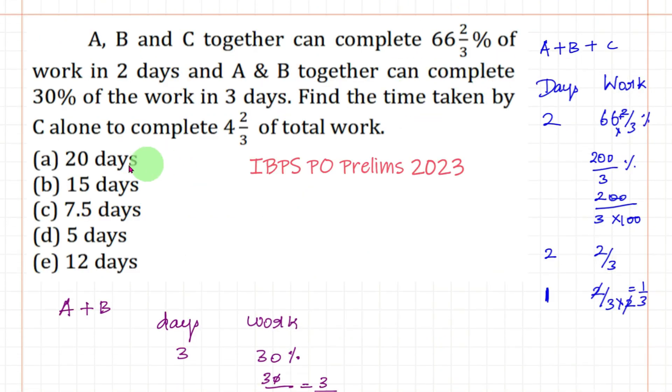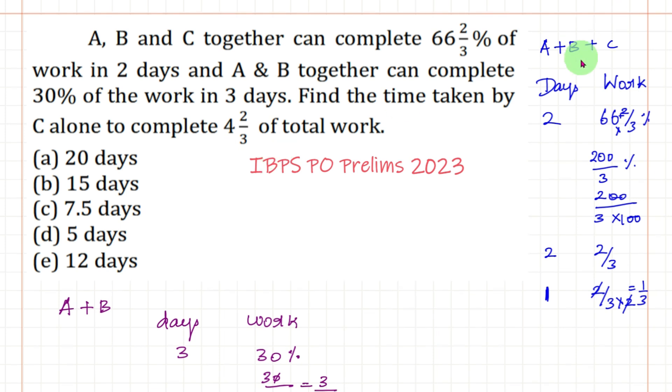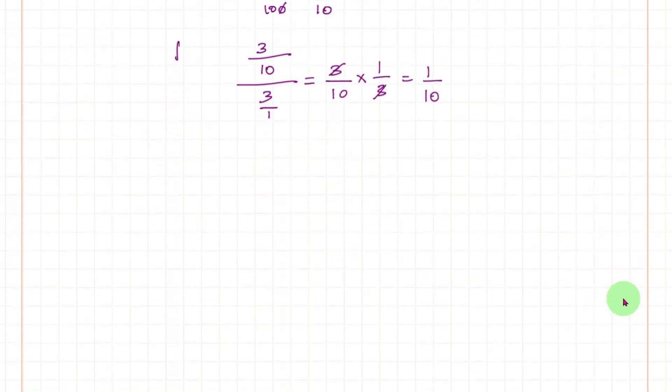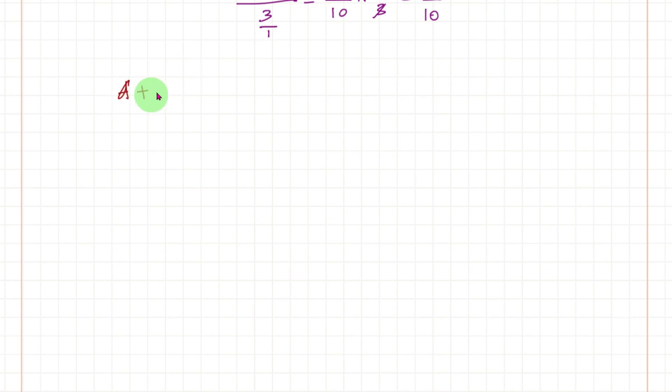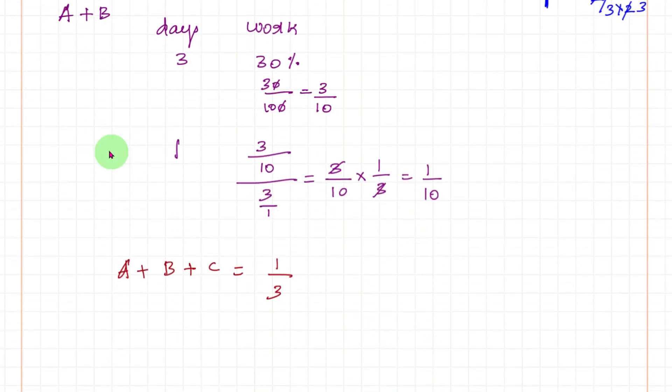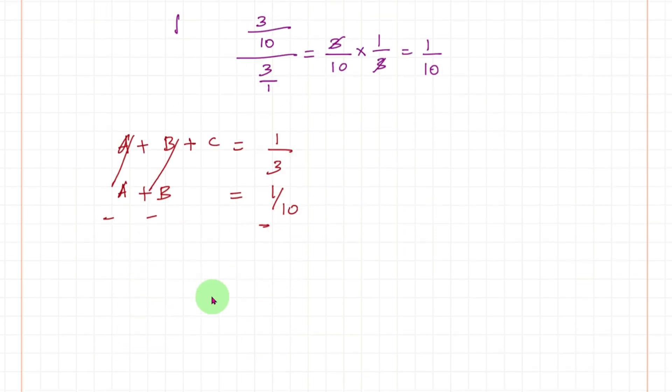Now find the time taken by C alone to complete 4 2/3 work. To find C's 1 day work, we can use these two solutions: A plus B plus C 1 day work and A plus B 1 day work. So A plus B plus C equals 1/3 and A plus B equals 1/10. By solving this equation we get C's 1 day work by changing the sign. A and B cancel, C equals 1/3 minus 1/10.